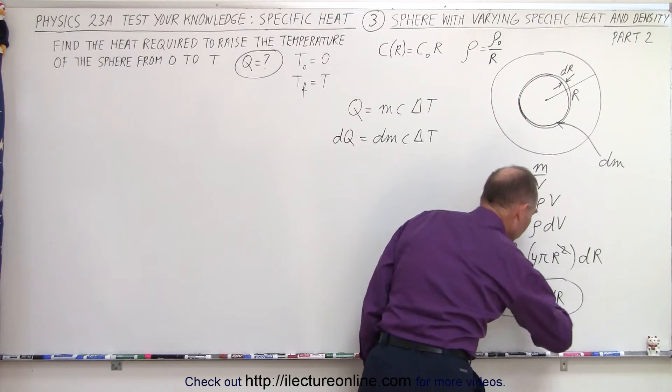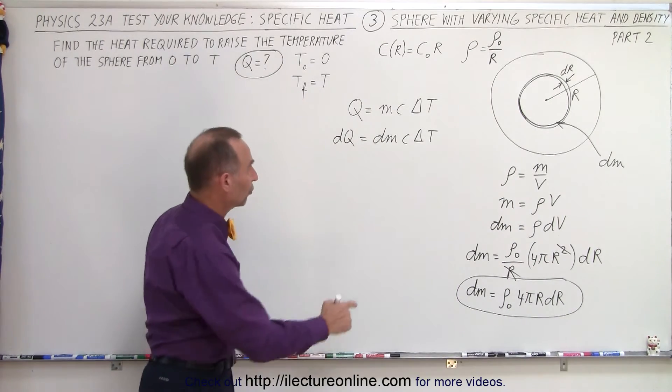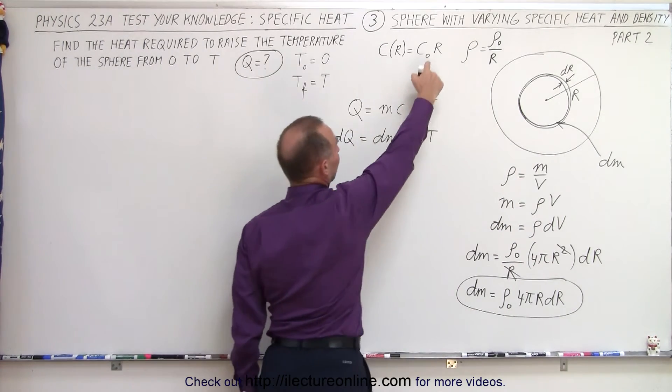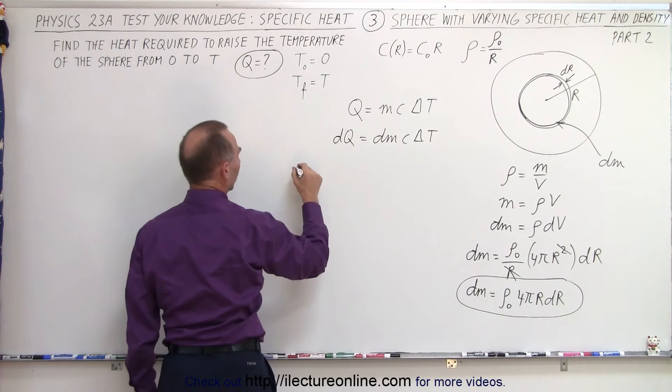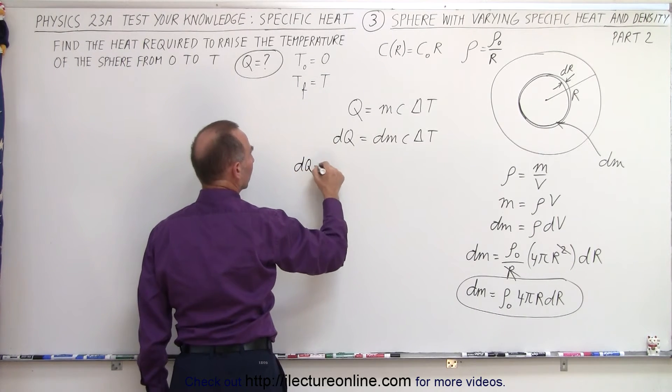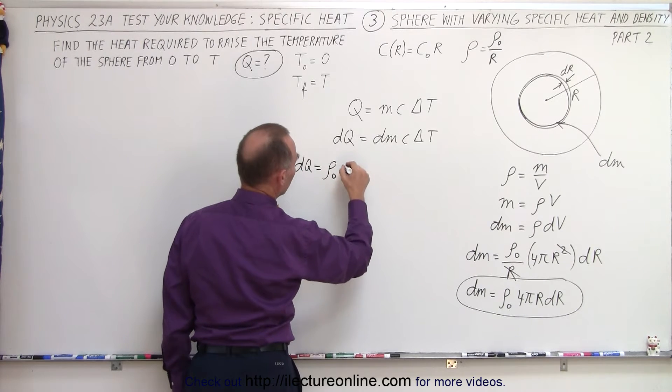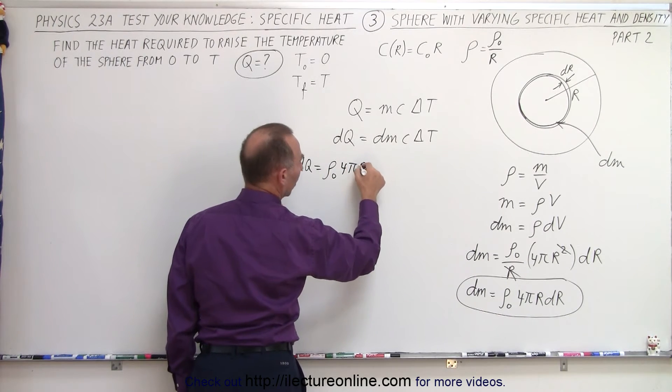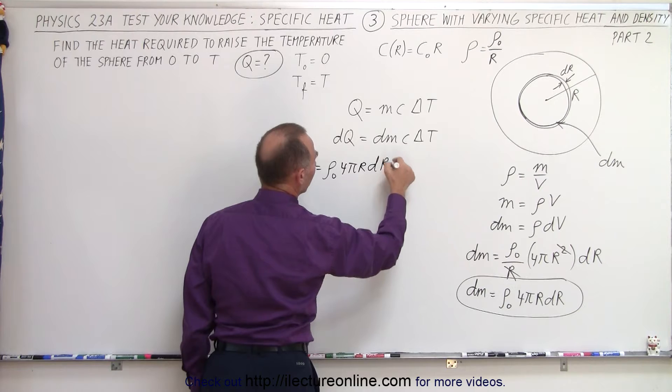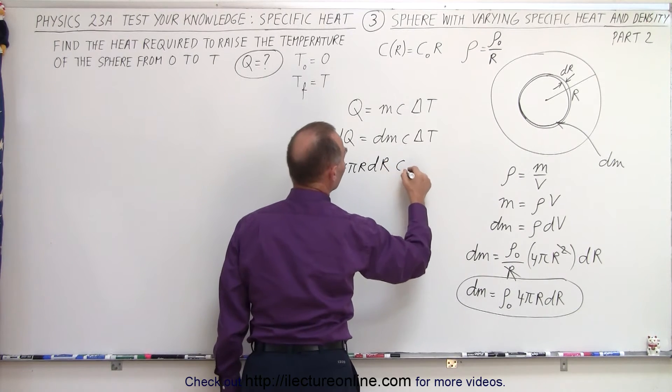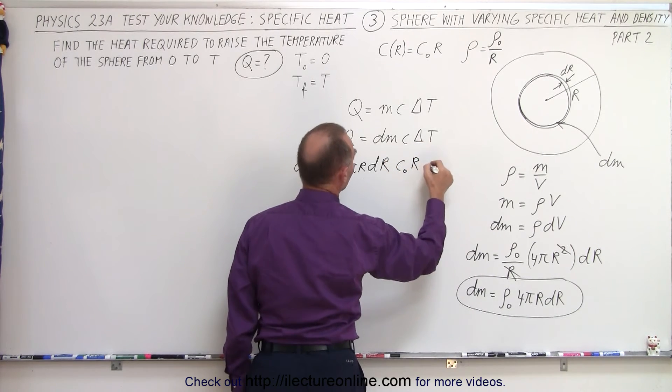So now we have a new equation for dm, which goes in here, and the specific heat can be defined by that. So dQ is going to be equal to dm, which is the constant density, 4 pi r times dr, times C, which is C sub naught times r, times the delta T.